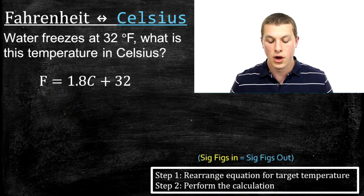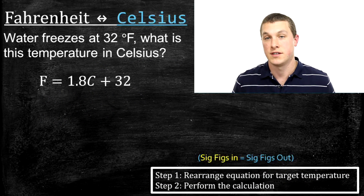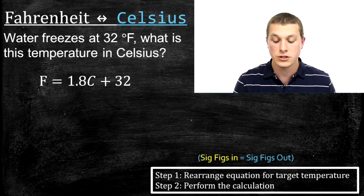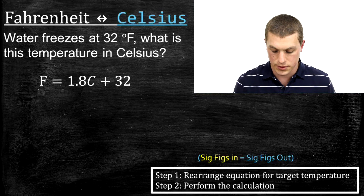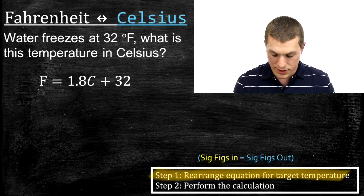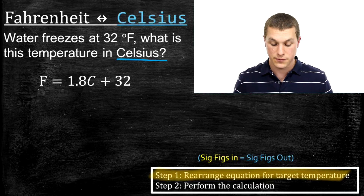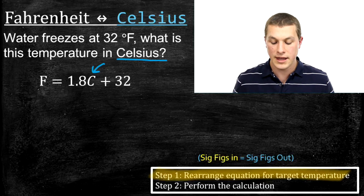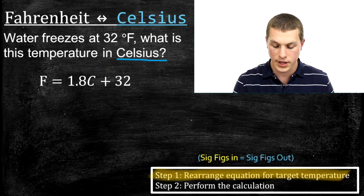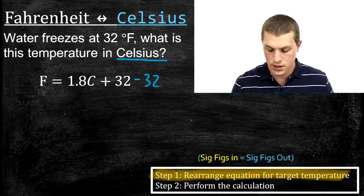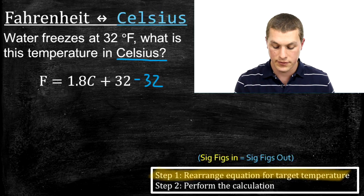Now going the other direction: water freezes at 32 degrees Fahrenheit — what is this temperature in Celsius? This involves a bit more algebra before we can solve for Celsius. Step one says rearrange the equation for the target temperature, which is now Celsius. We need to get C by itself, so we subtract 32 from both sides.